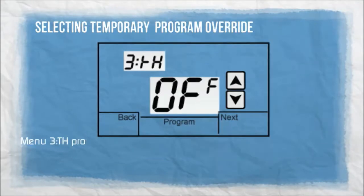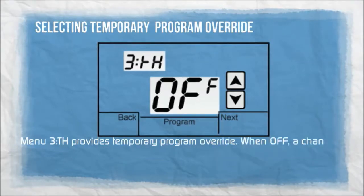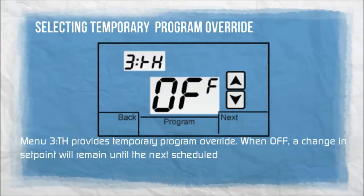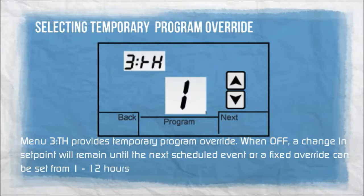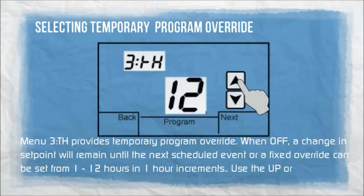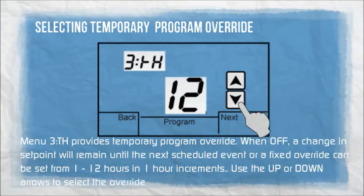Menu 3TH provides temporary program override. When off, a change in set point will remain until the next scheduled event, where a fixed override can be set from 1 to 12 hours in 1-hour increments. Use the up or down arrows to select the override time. The factory default is off.